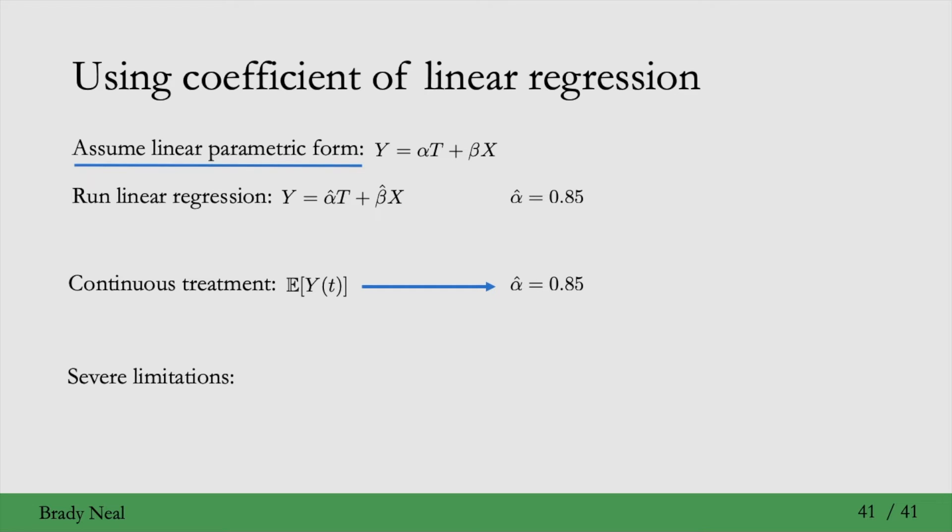The main one is that we assumed a linear parametric form. This has the implication that the causal effect is the same for all individuals in the population, which can be a pretty unnatural assumption in most cases. This is implied by the assumption of a linear parametric form. And to show you this, just consider that Yi(t) equals alpha t plus beta Xi. That's just taking that assumed parametric form and writing out the unit-level potential outcome that implies.